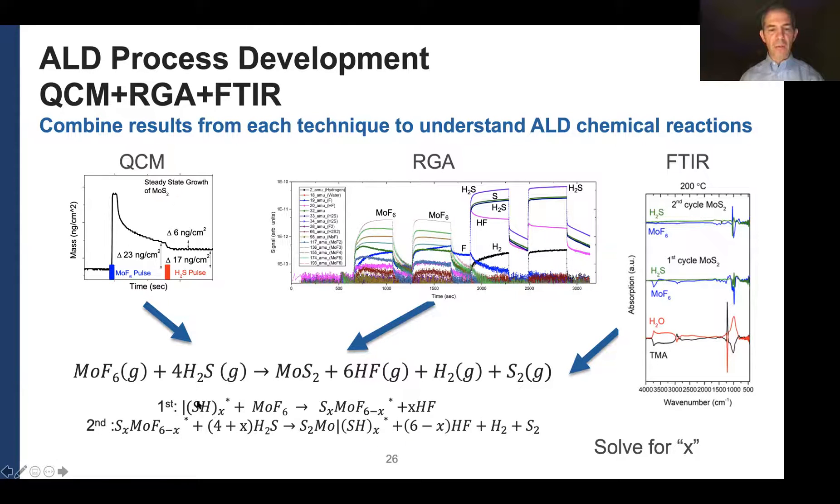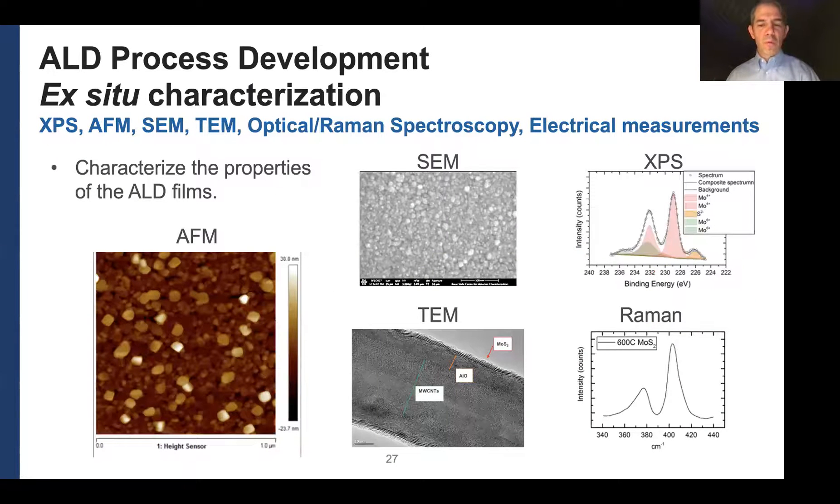So here if I have some thiol group on a surface and I add MoF6, then I might write down some equations for that process. And then take this as my, now is on my surface, and that becomes the part of the equation for my second half reaction when I'm sending in hydrogen sulfide. And I can try to then solve for this X by looking at all of the data. So it's interesting and then when you're able to do it, a lot of times the solution is, is then yet another puzzle that you have to try to solve. So we'll, and we'll talk about that if, if we have time for MoF6 and H2S.